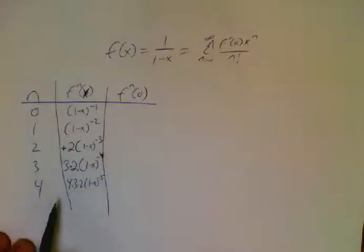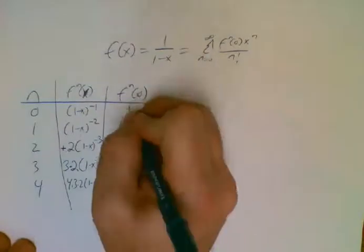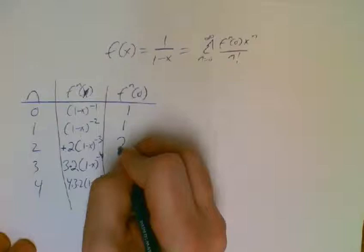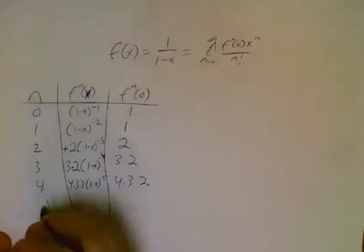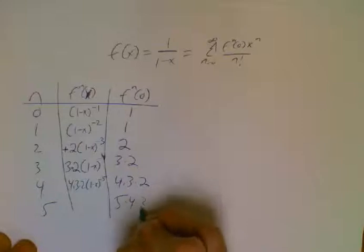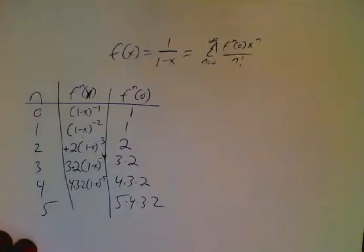Plug in 0, I get 1, 1, 2, 3 times 2, 4 times 3 times 2. You can almost guess without me even writing 5 times 4 times 3 times 2.